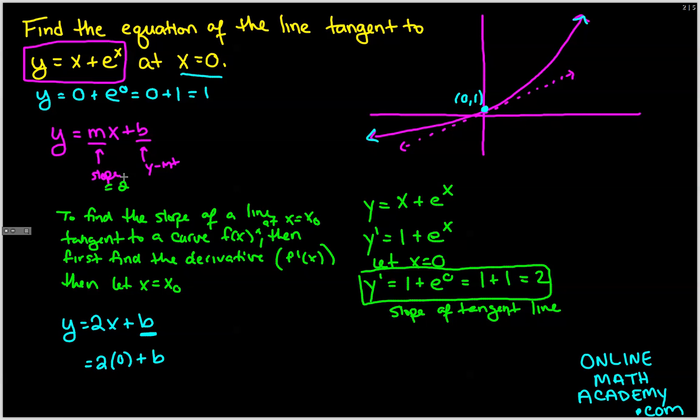Okay, so we can plug in 1 for y. So again, I plugged in x equals 0, and I used the x equals 0 to find the corresponding y value, which is 1. And I got y equals 1. So let's simplify this even more. 1 equals 0 plus b. So we get that 1 is b.